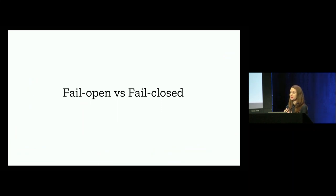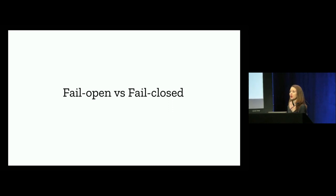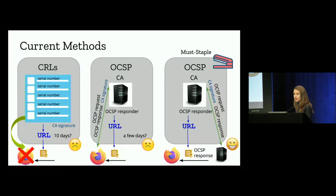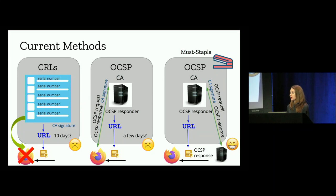All of the methods described so far fail open — if the client cannot determine the revocation status of the certificate, it goes ahead with the connection anyway. If it were to fail closed, on the other hand, it would terminate the connection as soon as it could not determine revocation status. That's why we really like OCSP Must Staple — a TLS extension which signifies to the client that it will be receiving an OCSP response, and if that OCSP response is not present, it immediately terminates the connection. The problem with OCSP Must Staple, though, is that it's not widely deployed on the web, and many hosts don't actually support stapling.